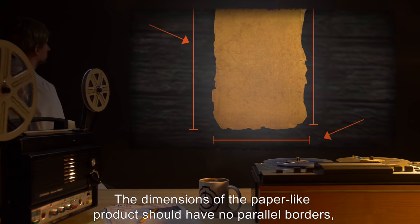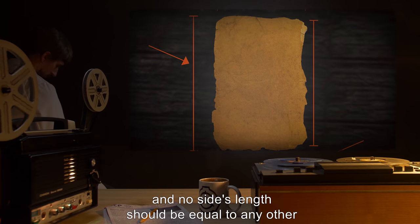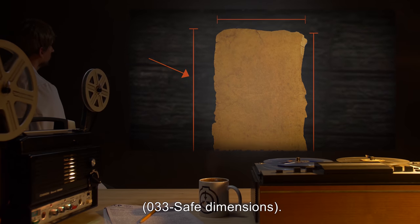The dimensions of the paper-like product should have no parallel borders, no right angles, and no side's length should be equal to any other 033 safe dimensions.